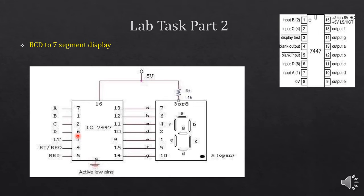This IC basically works on active low logic, which means when the output is 0, it will act as a HIGH output for the 7-segment display. There are 3 other pins — 3, 4, and 5 — also working on active low logic, meaning you have to apply 0 or ground here to use the purpose of these pins. LT means lamp test, which is used to test whether all the LEDs of the 7-segment display are working properly.